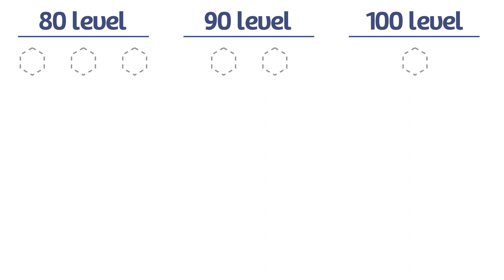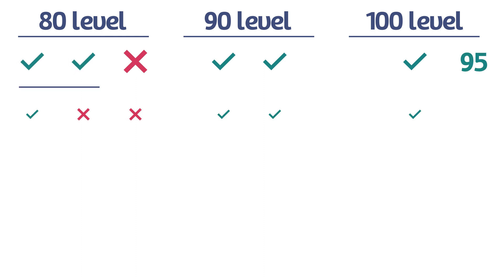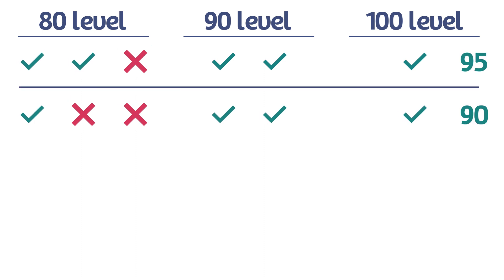Case 3: Students get all 90 and 100-levels correct, but one or more 80-levels wrong. In this case, I usually just take five points off for each 80-level question that is missed — so 95 for one miss, 90 for two misses, and 85 for three misses. Two to three missed 80-level questions are rare in this case, so you'll mainly see a simple calculation error in one of the 80-level questions if students do miss one.